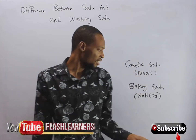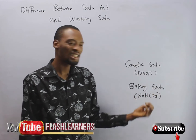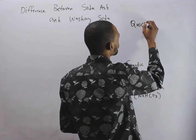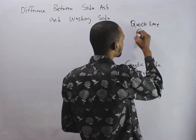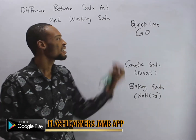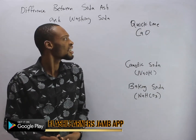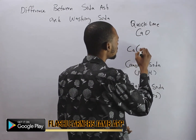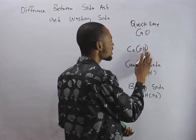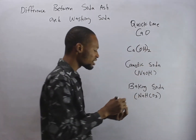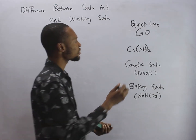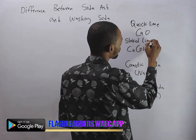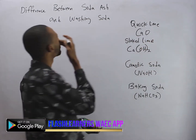NaOH is caustic soda. NaHCO3 is also referred to as baking soda. CaO, the oxide of calcium, is referred to as quicklime. When quicklime is dissolved in water it forms Ca(OH)2, and this Ca(OH)2 formed as a result of mixing quicklime and water is referred to as slaked lime.